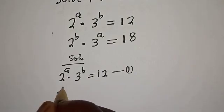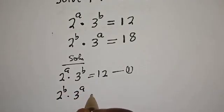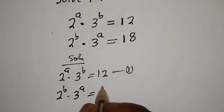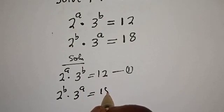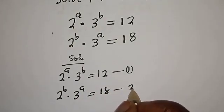2 raised to power b, multiplied by 3 raised to power a, is equal to 18. Let's call this equation 2.